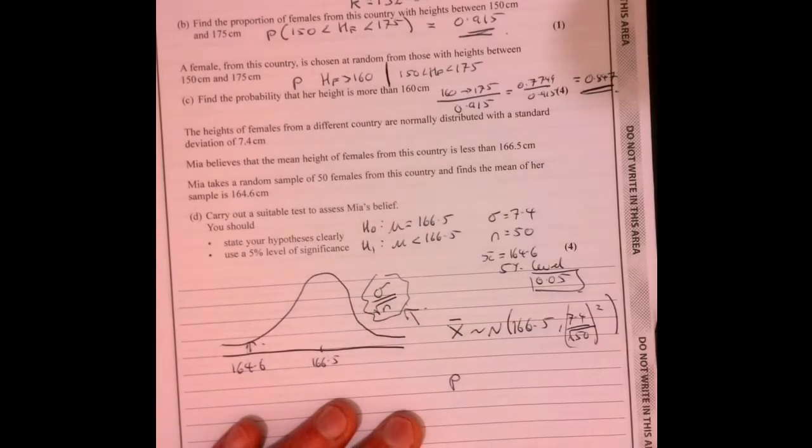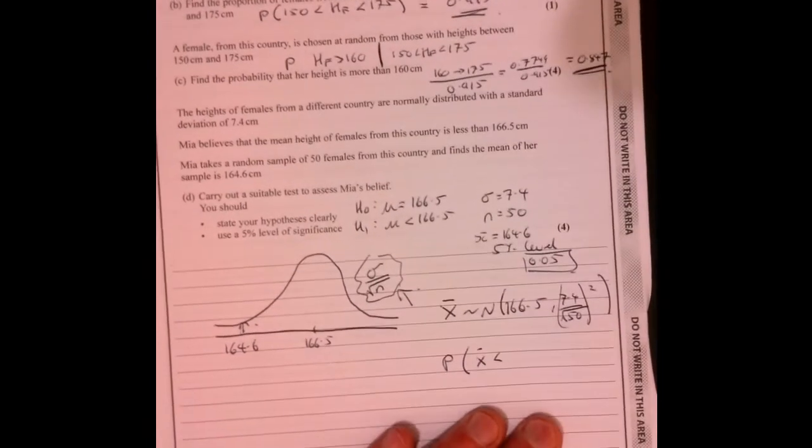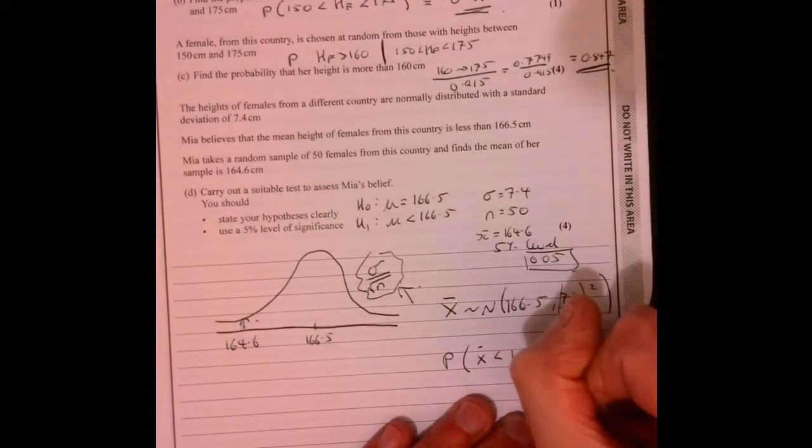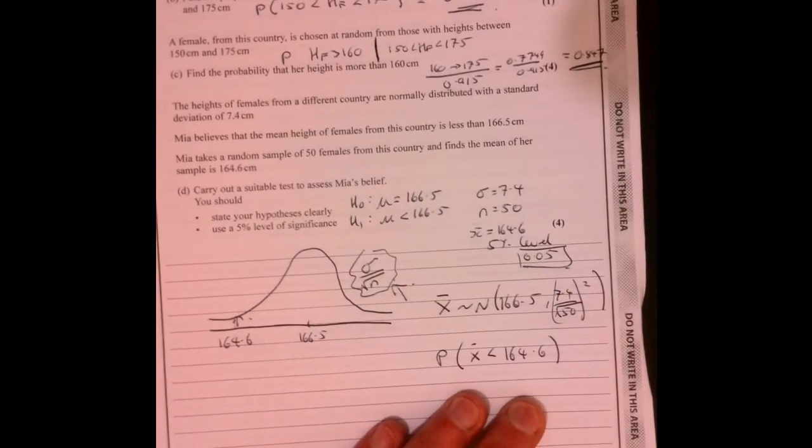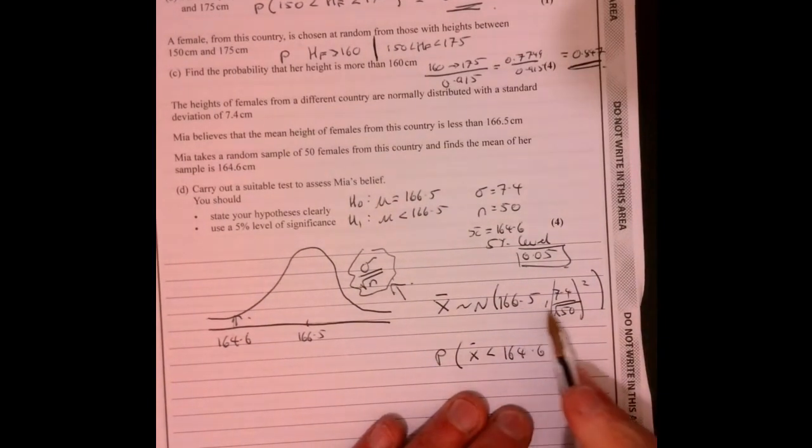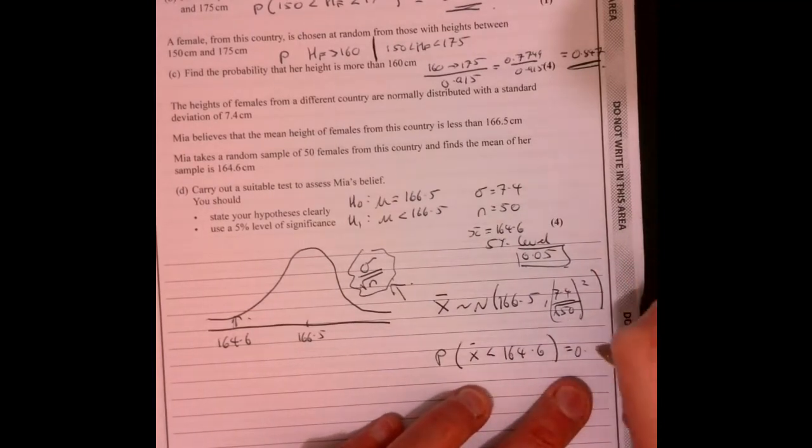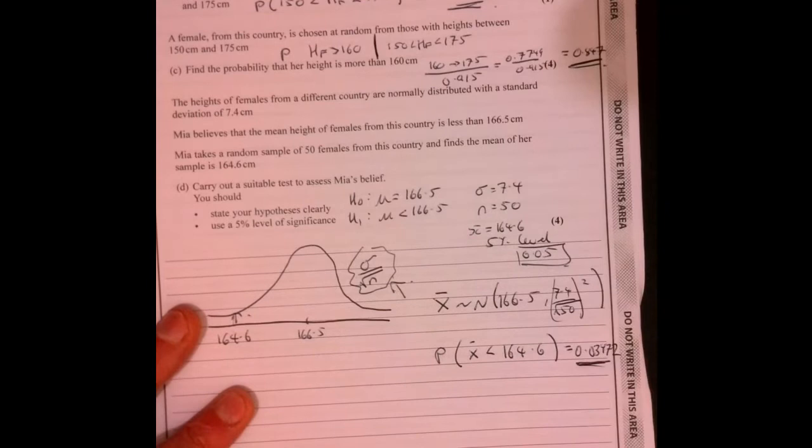What we're interested in is what's the chances, what's the probability that it's less than 164.6? That was our value. If I just feed these values into my calculator, that will give you 0.03472. Now we need to make sense of that number.